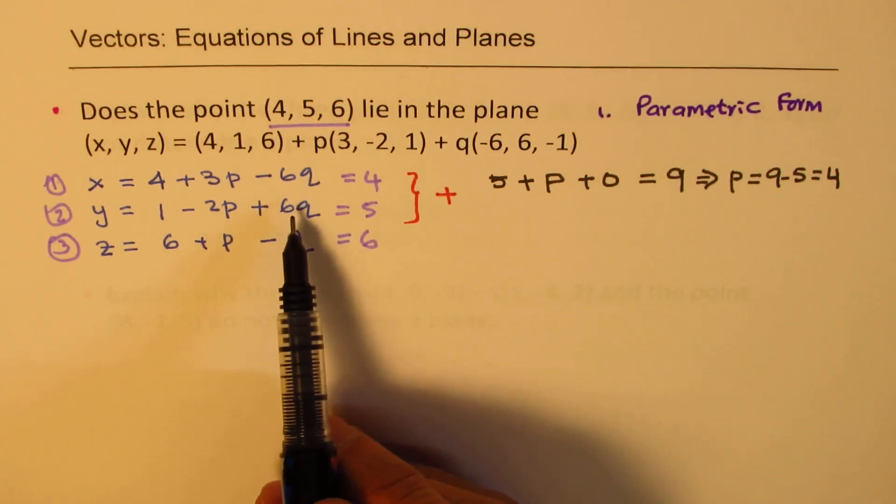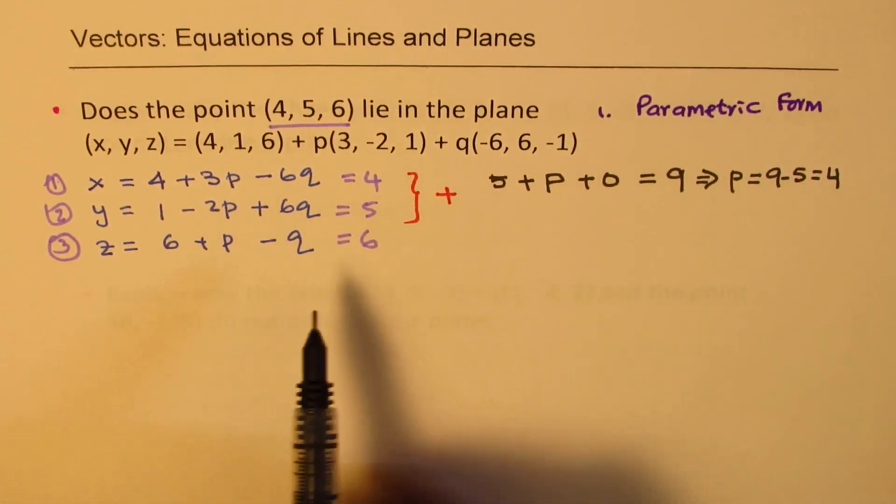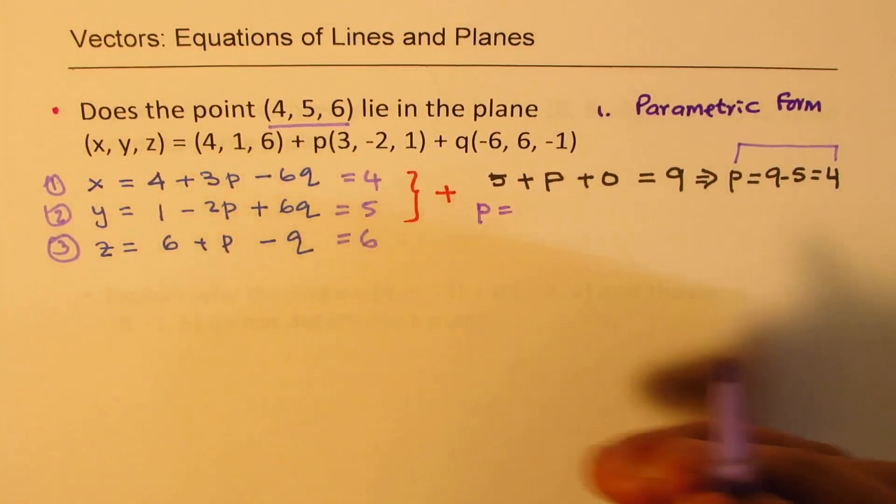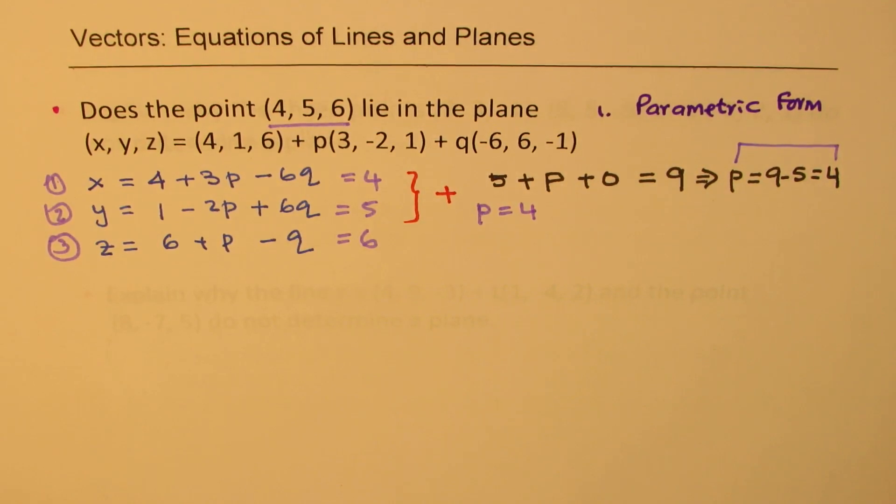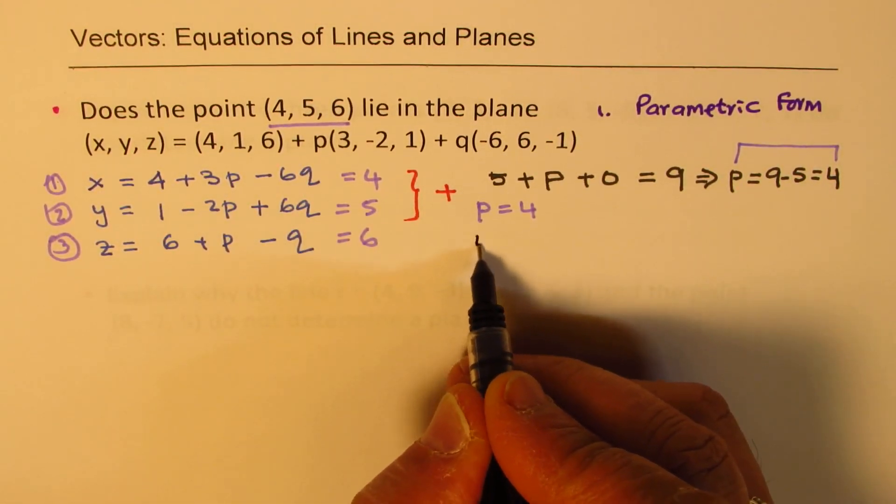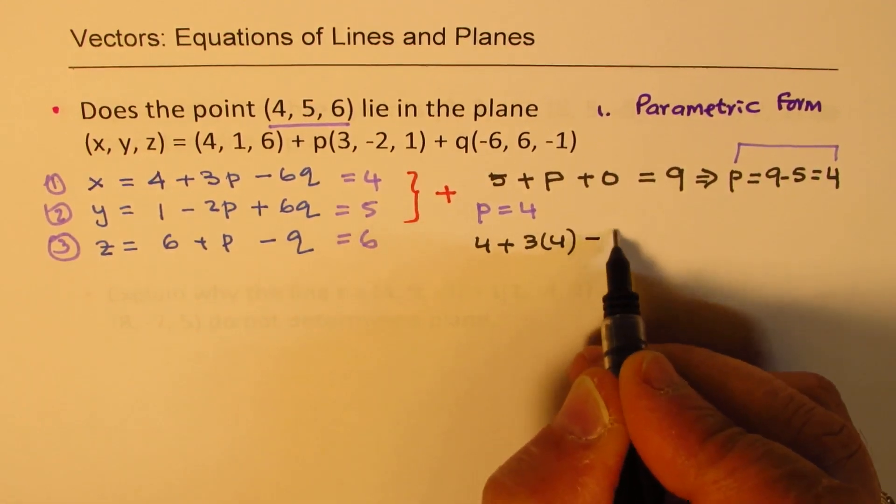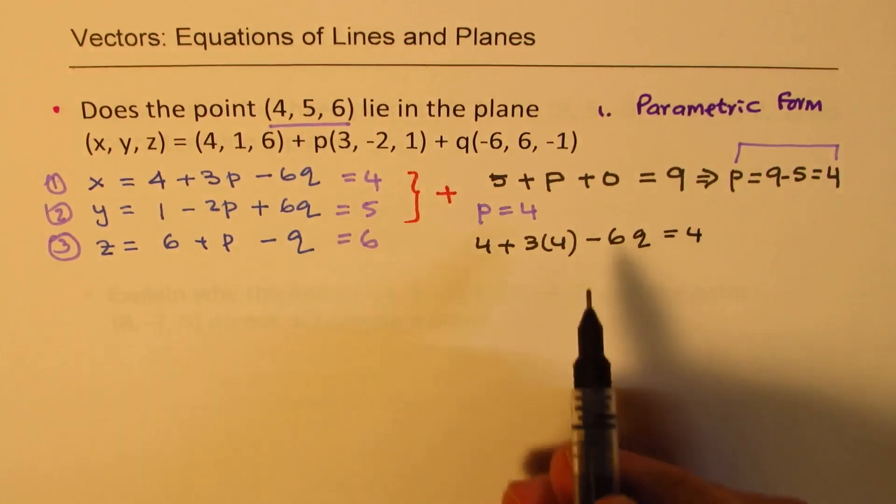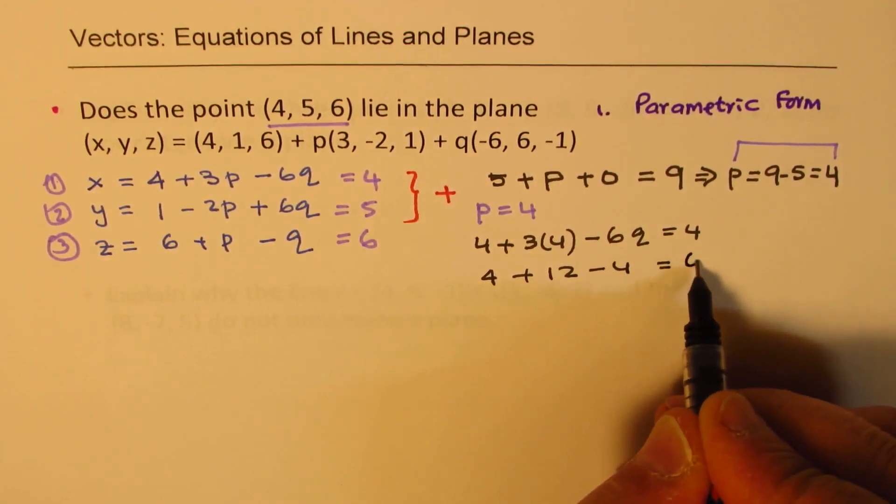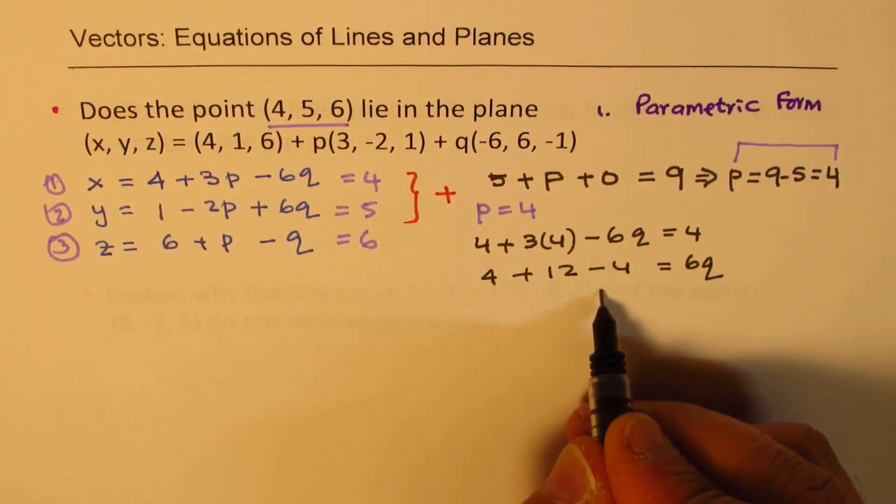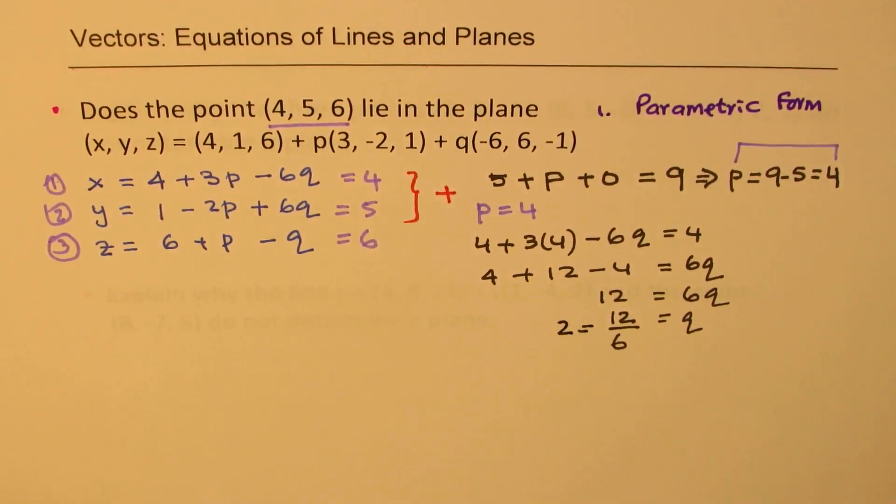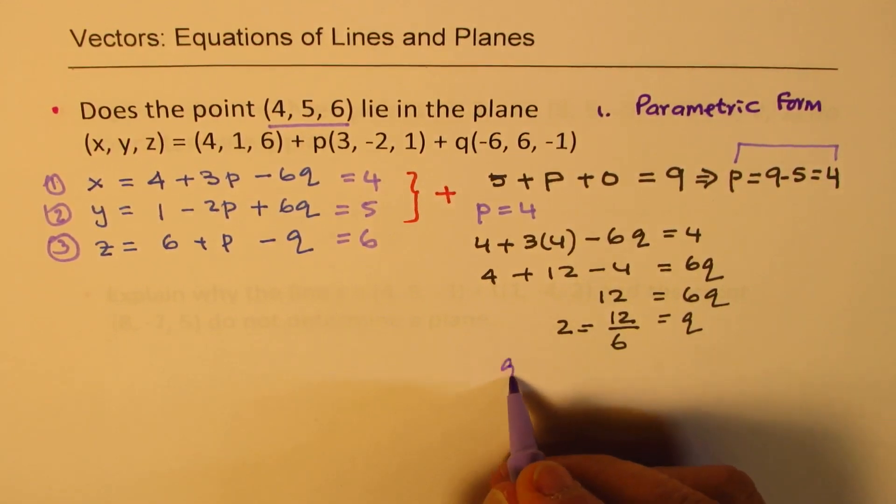Now, same two equations, we can now find the value of q since we know the value of p. So we are going to substitute 4 for p. If I substitute 4 for p in the first equation, then what do we get? We have 4 + 3 times 4 - 6q equals to 4. Now from here, we can write 6q as what? So we get 4 + 12 - 4 equals to 6q. So that means 12 is equal to 6q, or the value of q is 12 divided by 6, which is 2. So we get q as equal to 2.